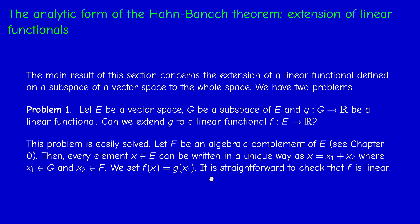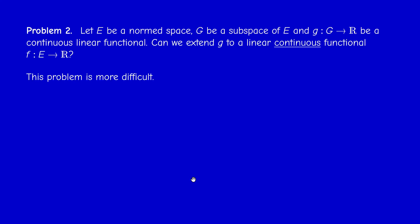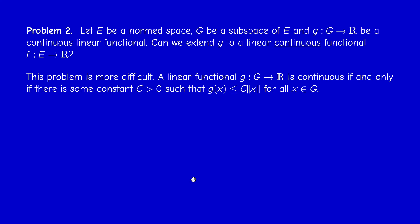Now the second problem: suppose E is a normed space, G is a subspace of E, and we have a linear function g which is moreover continuous. The question is: can we extend g to the whole space while preserving continuity? This problem is more difficult. The condition that g is continuous means there exists a constant C such that |g(x)| ≤ C‖x‖ for all x in G. Instead of working with a norm or a multiple of a norm, we can tackle a more general problem by working with what we call a sub-norm or a Minkowski functional.